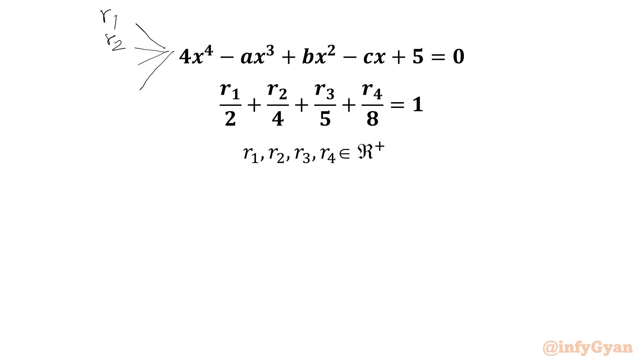Given that R1 over 2 plus R2 over 4 plus R3 over 5 plus R4 over 8 equals 1, and R1, R2, R3, R4 are positive real numbers.